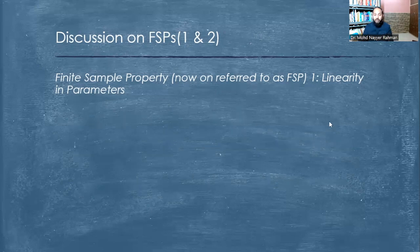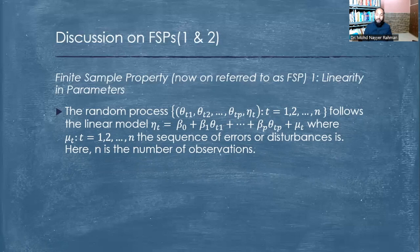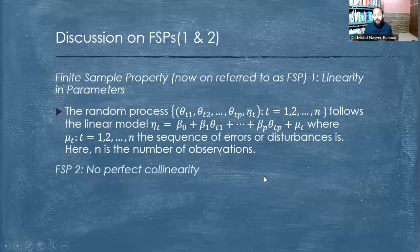Linearity in parameters means that the random process follows a linear model where, if we look at the sequence of errors of distribution, N being the number of observations, simply it means the coefficients should be linear in nature. The second FSP is no perfect collinearity.